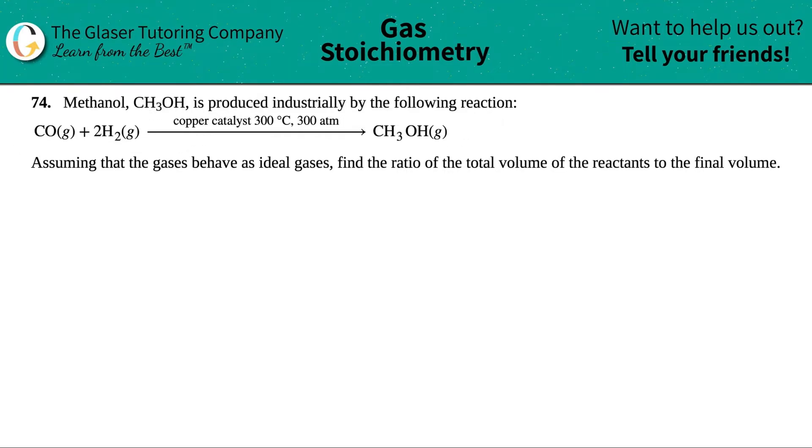Now they say, assuming that the gases behave as ideal gases, find the ratio of the total volume of the reactants to the final volume. Okay.